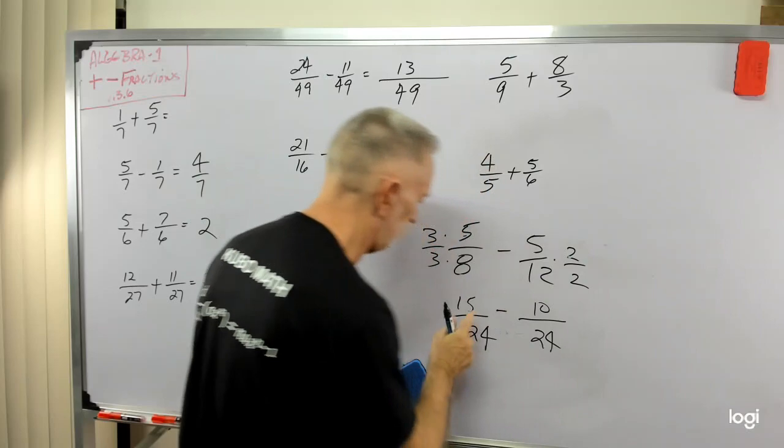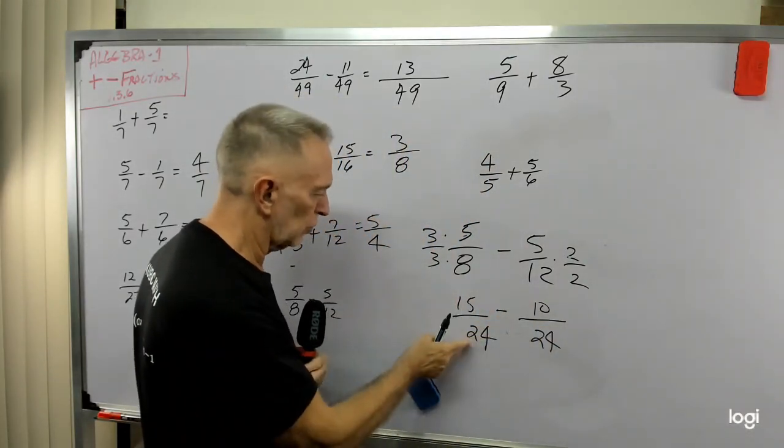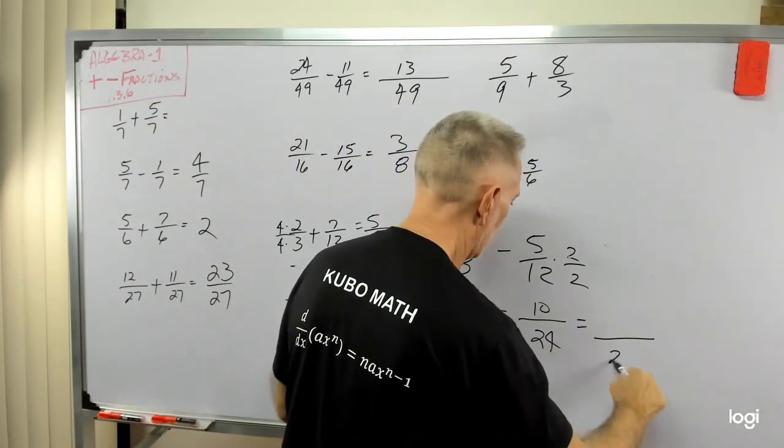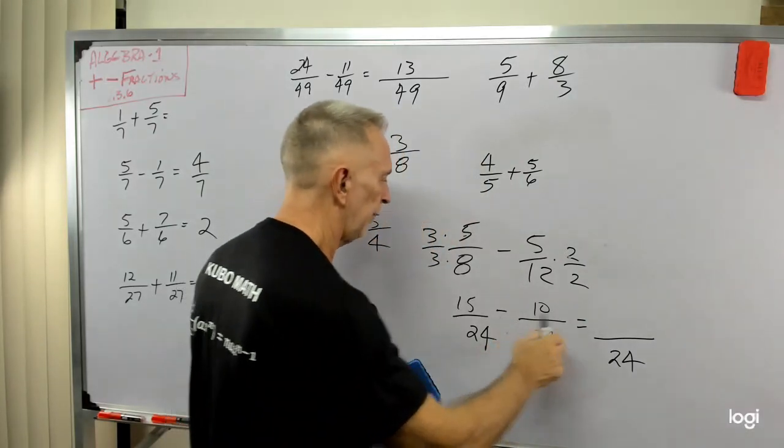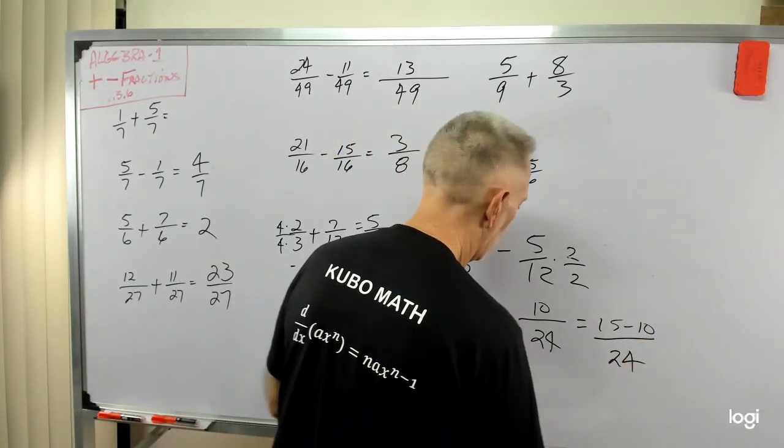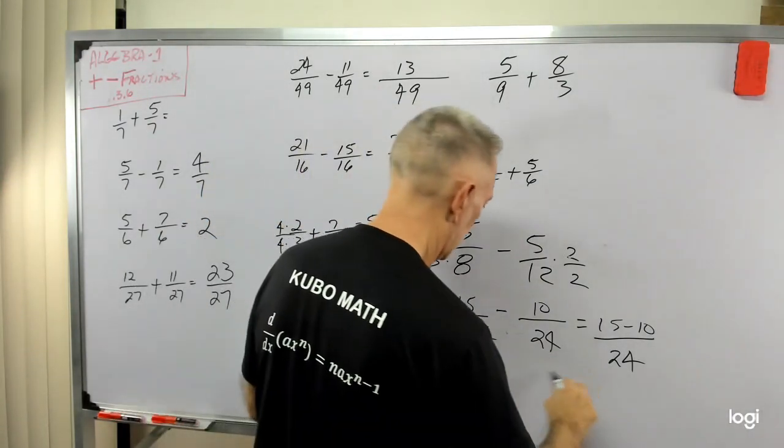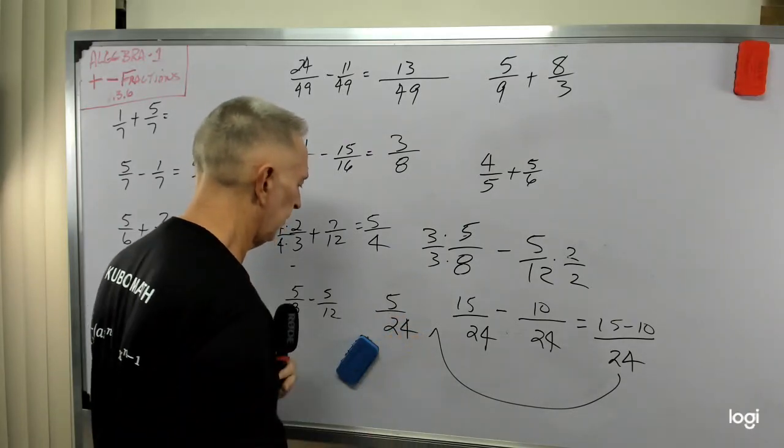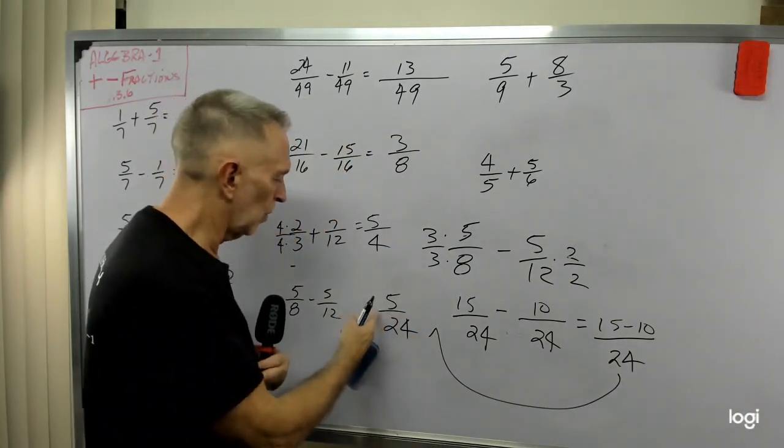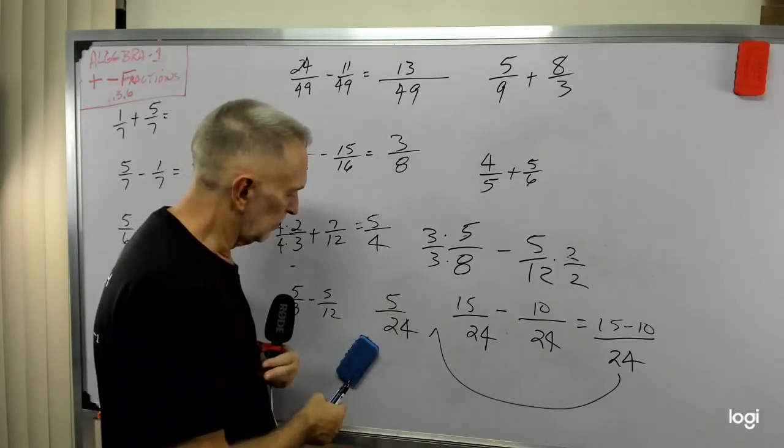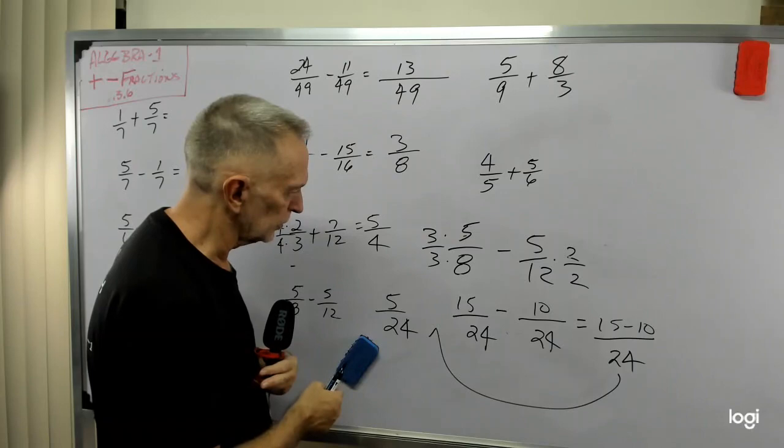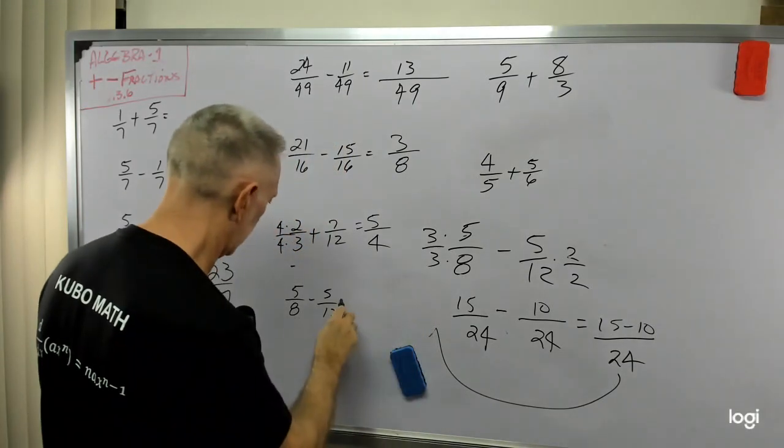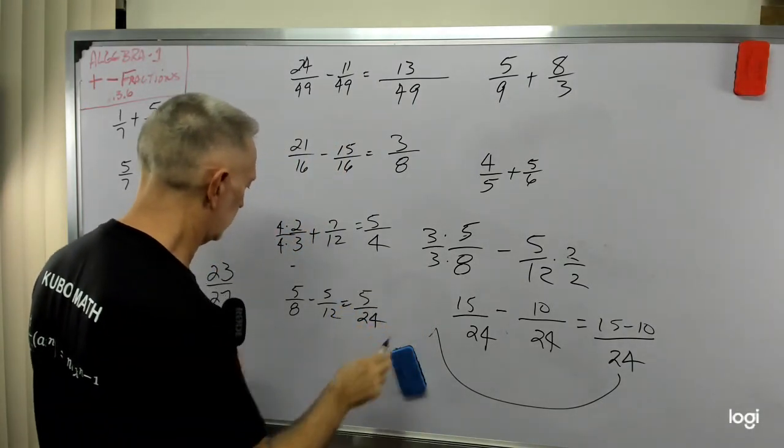So now I have 15 over 24 minus 10 over 24. If we combine those into a common denominator, now it's 15 minus 10, which gives me 5. Let's get it back over here. 5 over 24. 5 is a prime number. 1 times 5 is its only multipliers, or only factors. So 5 over 24 would be the answer for that one.